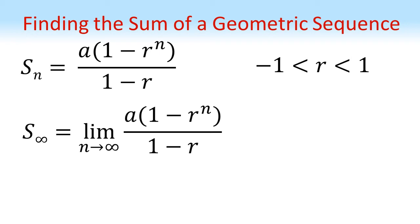But as n tends towards infinity, r to the n tends towards 0, because multiplying by a number between minus 1 and 1 each time decreases the magnitude of the answer.